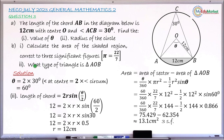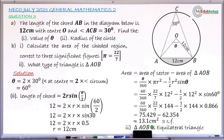The last question asks: what type of triangle is triangle AOB? The sides AO and OB are both radii, each equal to 12 cm. Since chord AB is also 12 cm, all three sides are equal, so triangle AOB is an equilateral triangle.